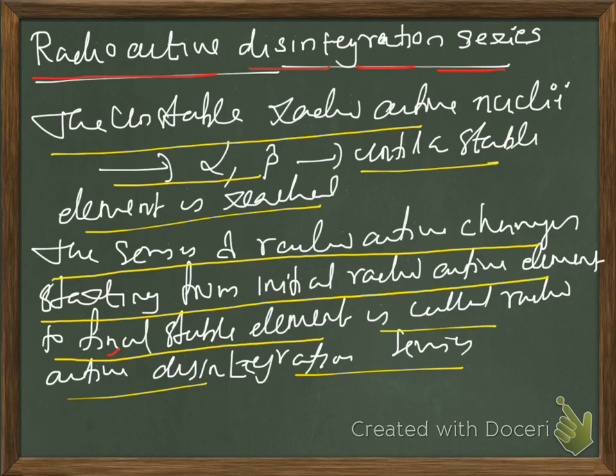Dear friends, now we have to discuss about radioactive disintegration series. It actually represents a series of changes that happen due to the instability of the nuclei. Naturally, each and every unstable system has a tendency to get stability by itself undergoing some changes. The same thing can happen in the case of unstable nuclei also.